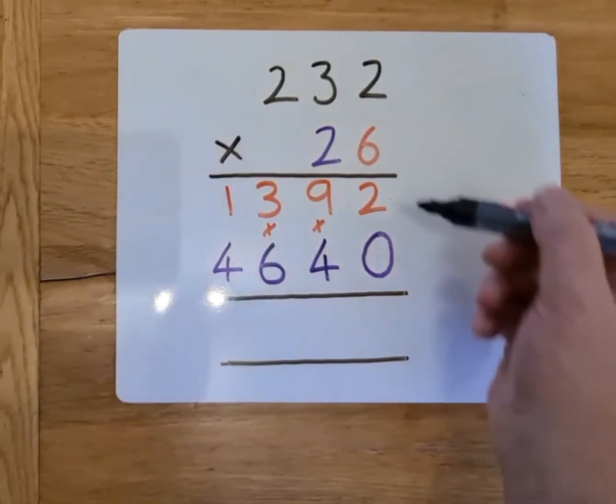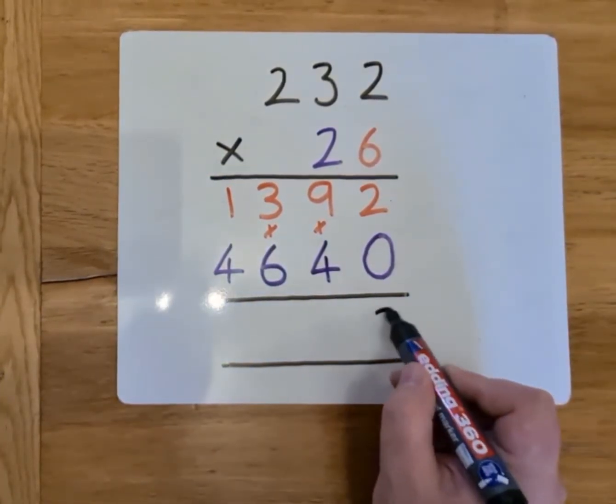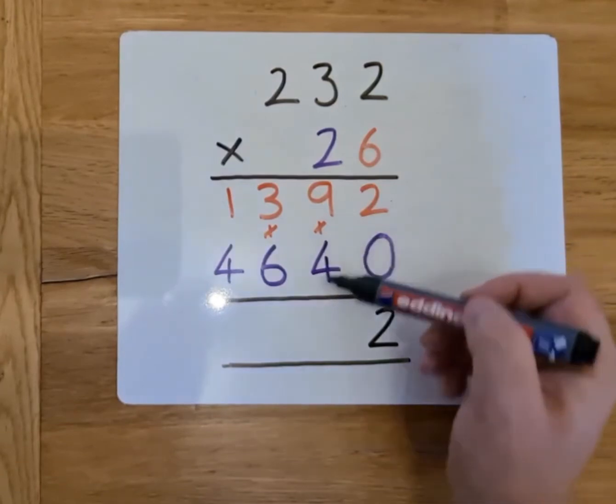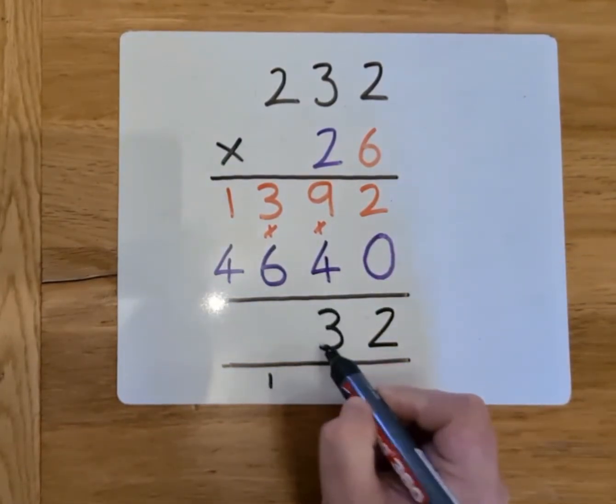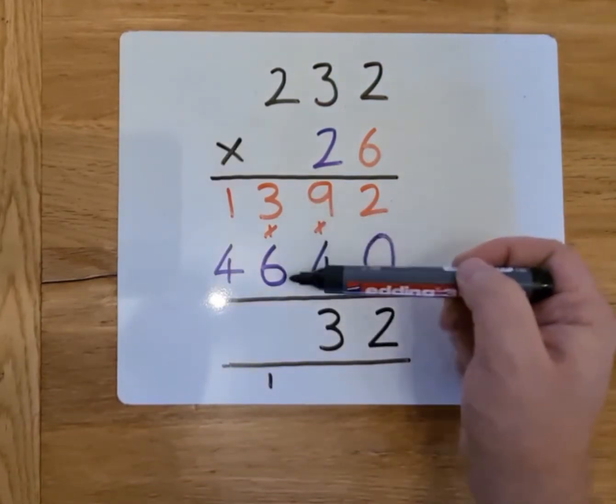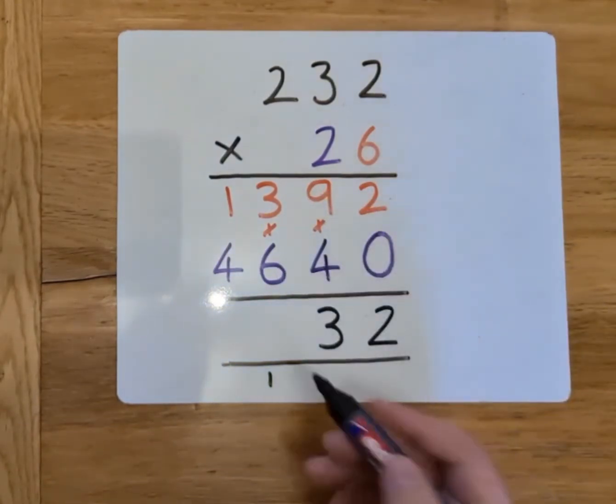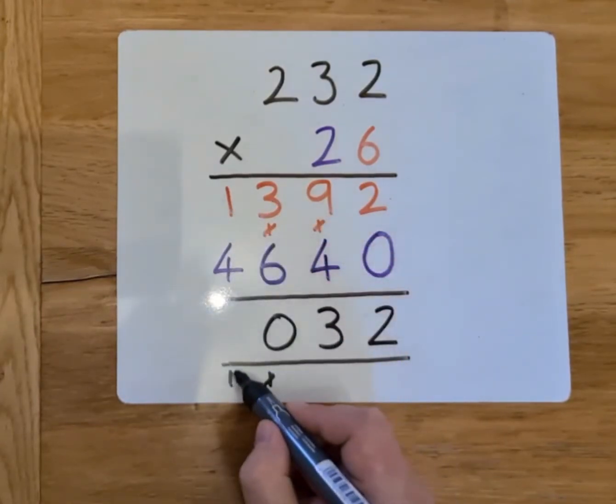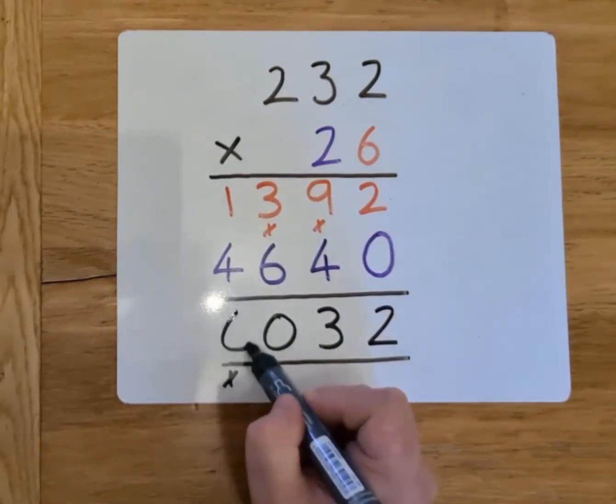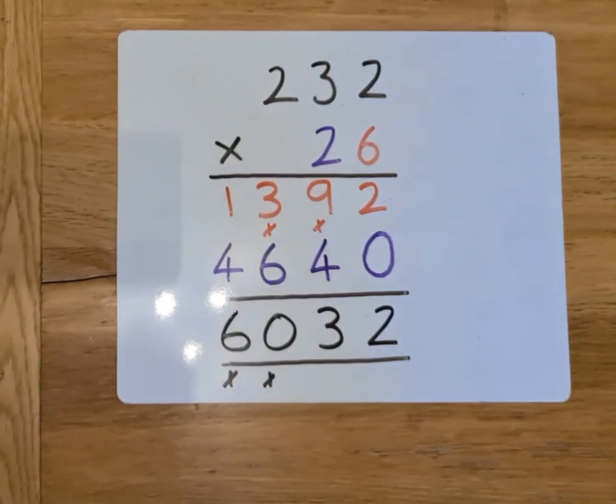Okay, let's have a look at how we work it out. We'll do 2, add 0, which is 2. 9, add 4, which is 13. So we'll carry the 1, put the 3 there. We'll do 3, add 6 is 9, add the extra 1 is 10. And 1, add 4 is 5, add the extra 1 is 6. So our answer is 6,032.